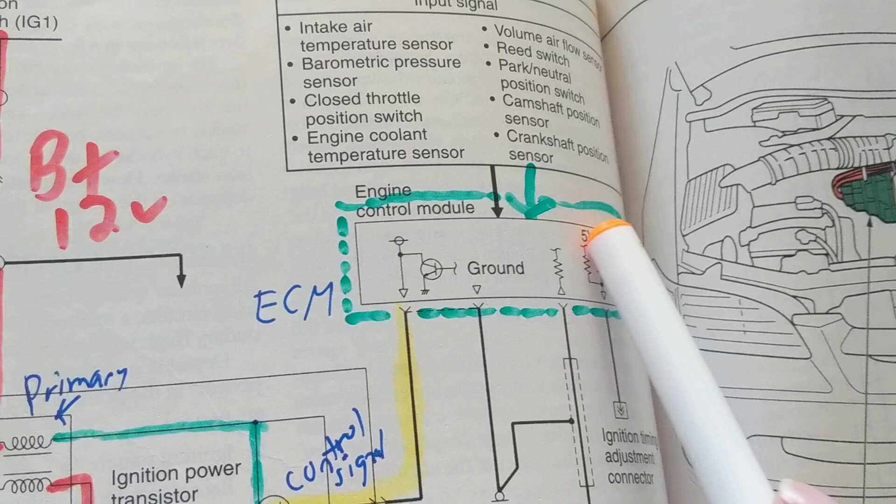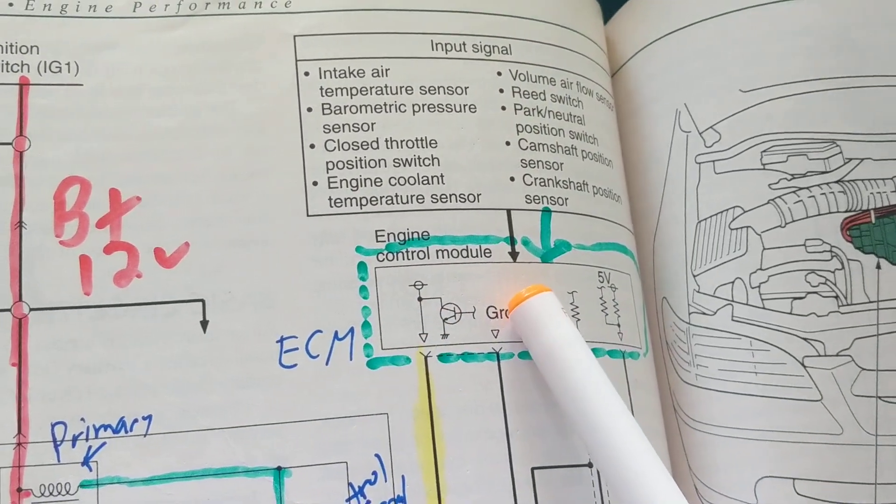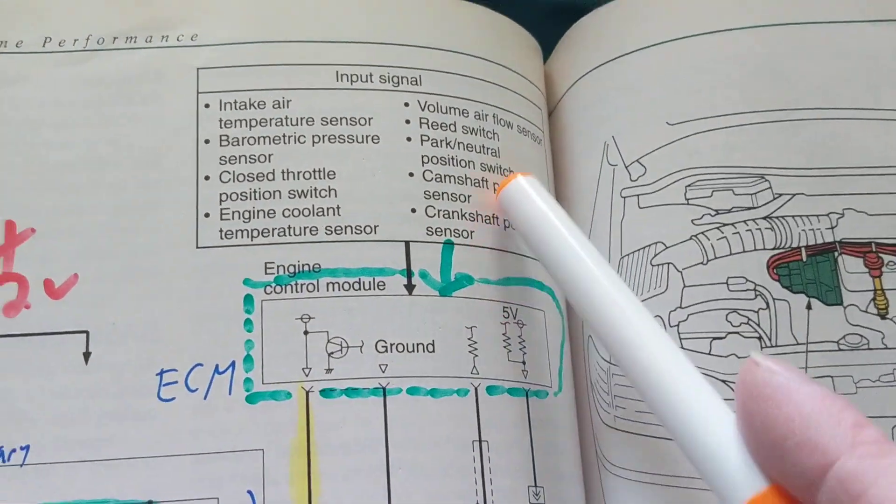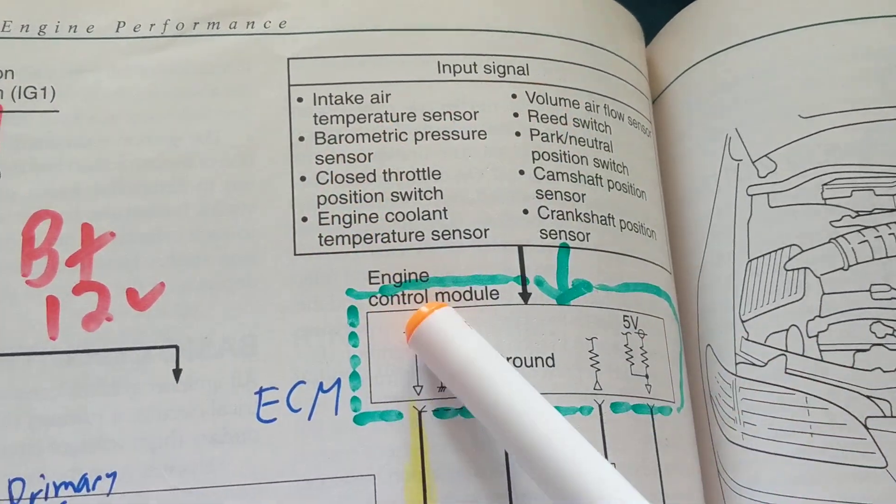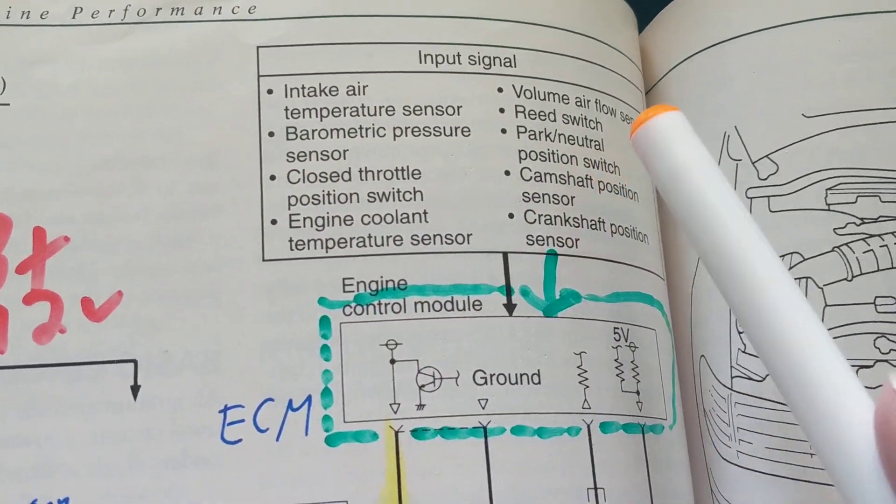This could be an ECM, this could be a PCM—it doesn't really make a difference. The input signals come in from these various sources: sensors and also switches.